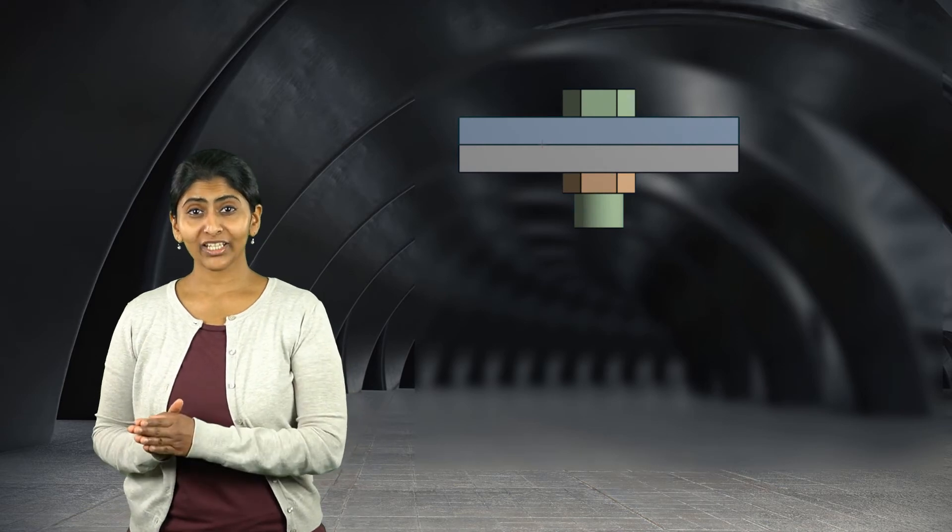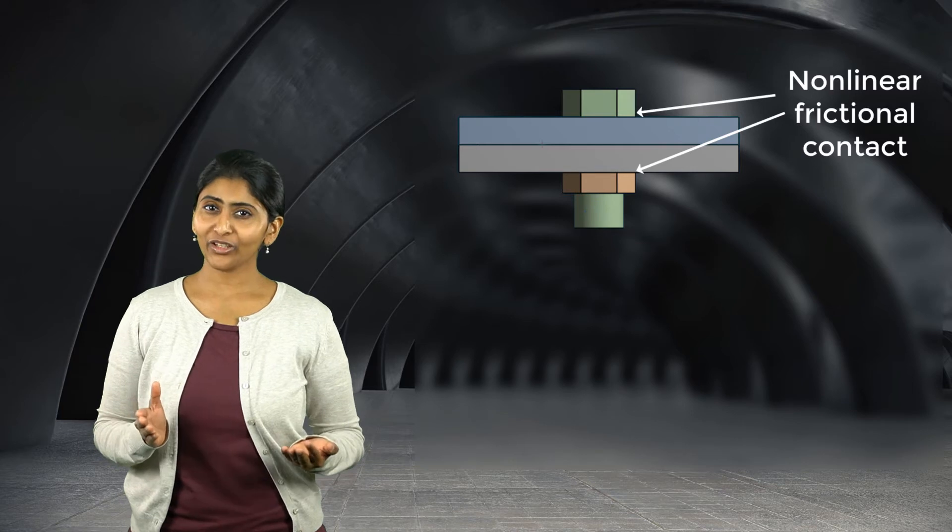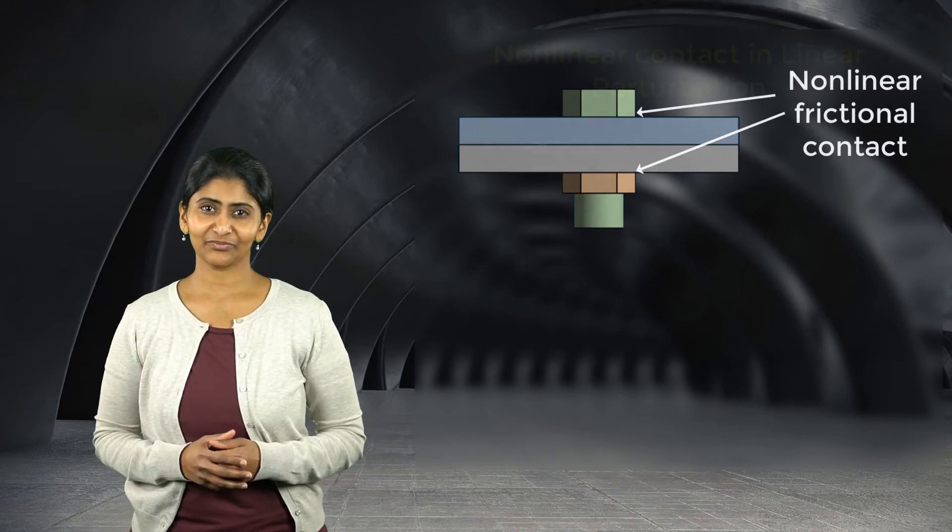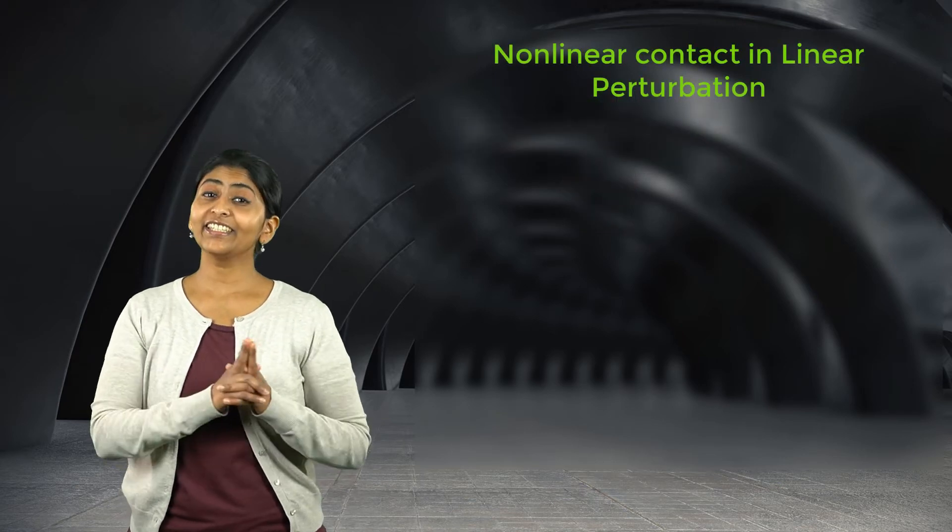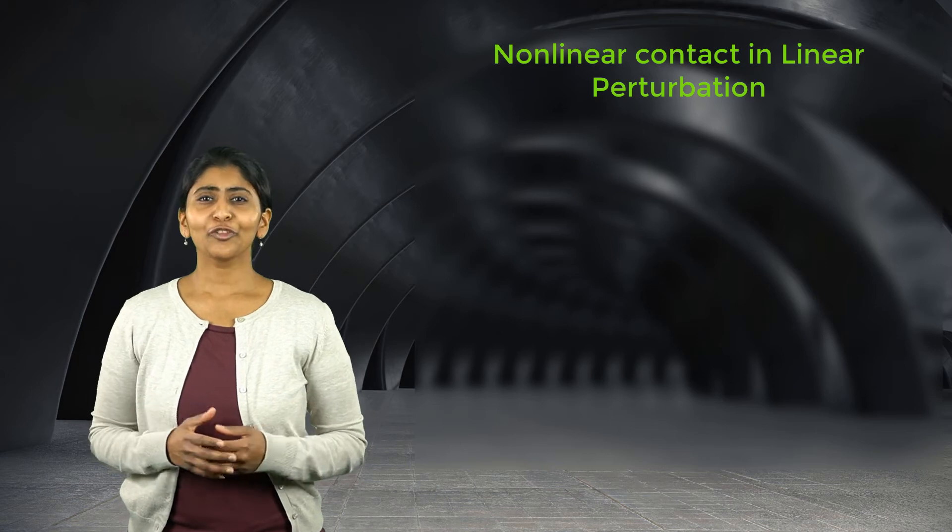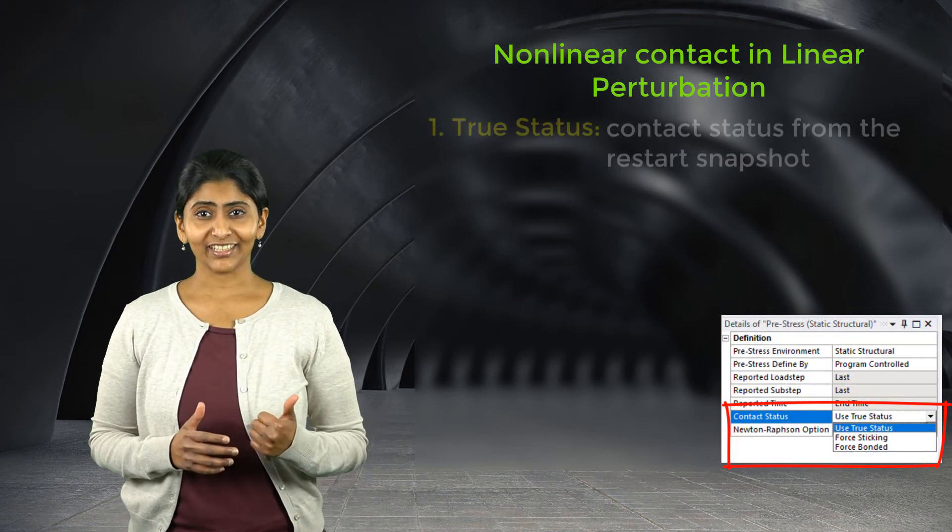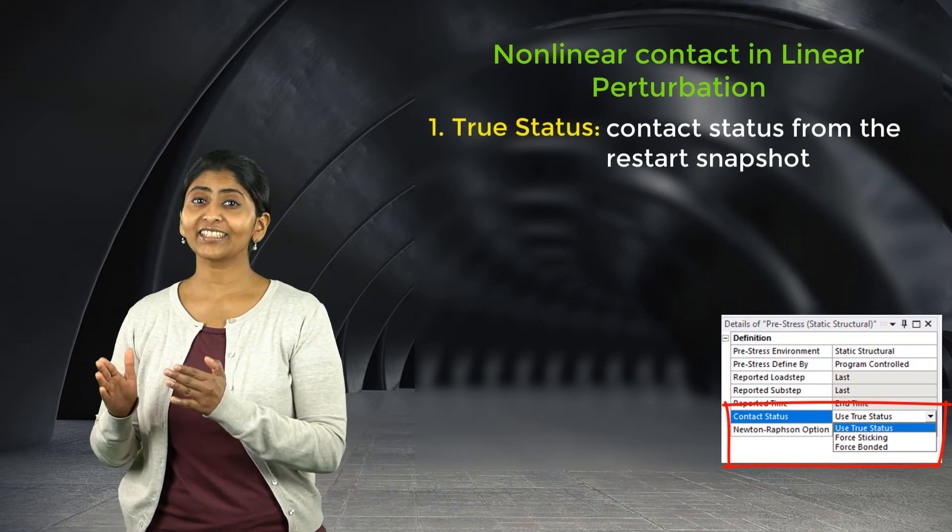In a bolted assembly, the contact between bolt head or nut and a mating face is usually nonlinear or frictional contact in structural analysis. So how do we treat that nonlinear contact in linear perturbation analysis? A few options are available.